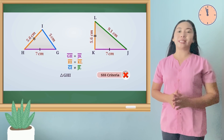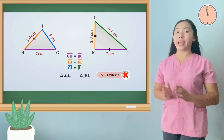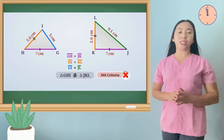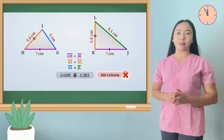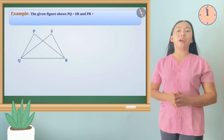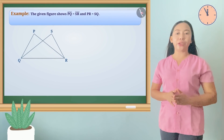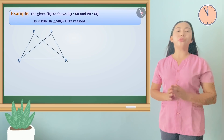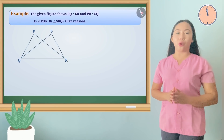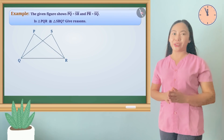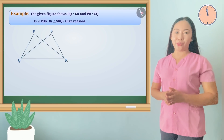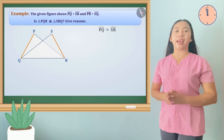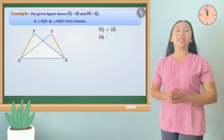So we can say that triangle GHI is not congruent to triangle JKL. Let's take this example. The given figure shows that side PQ is equal to side SR, and side PR is equal to side SQ. Is triangle PQR congruent to triangle SRQ? In triangle PQR and triangle SRQ, side PQ is equal to side SR, and side PR is equal to side SQ.